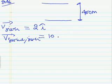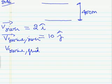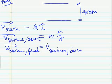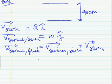Therefore we can find out the velocity of swimmer with respect to ground in vector notation, and that would be given as velocity of swimmer with respect to river plus velocity of river. Everything is in vector notation, so this just becomes 2 i cap plus 10 j cap.